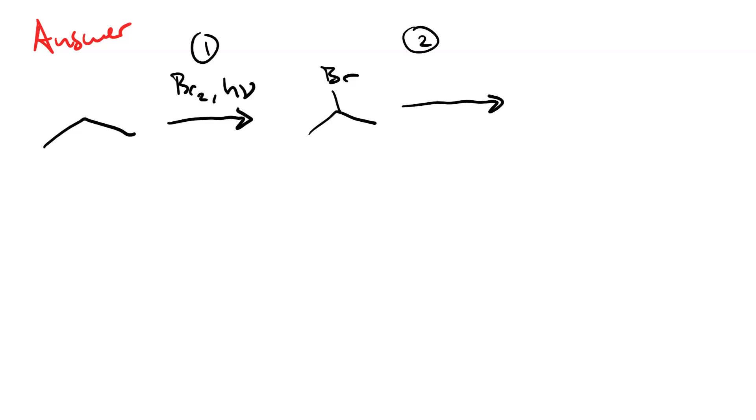Step two, sodium ethoxide. This is going to do an elimination reaction. And, we'll get propene. Zaitsev and Hoffman is not an issue here. There's only one way to go.